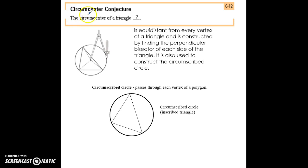The circumcenter is equidistant from every corner of the triangle and is constructed by finding the perpendicular bisector of each side. It's also used to construct the circumscribed circle.